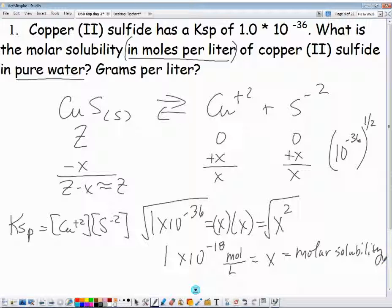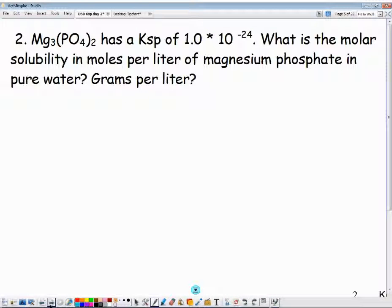What if it's not 1 to 1? I'm so glad you asked. This one says magnesium phosphate has a Ksp of 1 times 10 to the minus 24. What is the molar solubility in moles per liter of magnesium phosphate in pure water? Again, pure water. We're looking for the molar solubility, so we're looking for X. It's magnesium phosphate.